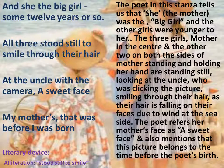In the explanation of this stanza, the poet tells us that the mother was the big girl and the other girls were younger. The three girls — mother in the center and the other two on both sides — are standing still, looking at the uncle who was clicking the picture, smiling through their hair as it fell on their faces due to wind at the seaside. The poet refers to her mother's face as 'a sweet face' and mentions this picture was taken before the poet's birth.